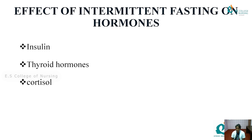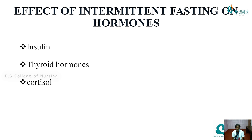Intermittent fasting has significant effects on hormones. Insulin is the important hormone which converts blood glucose into glycogen, maintaining blood glucose levels. The thyroid hormone maintains thyroid levels in the body. Cortisol, which we can call a stress hormone, is also affected by intermittent fasting and needs to be monitored and maintained in the body.